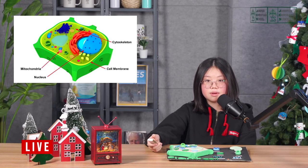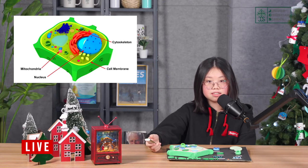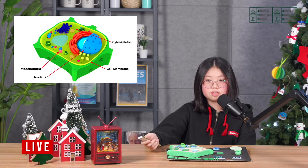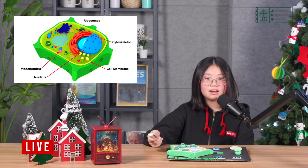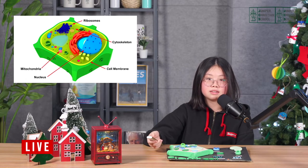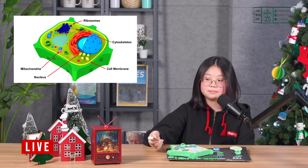Mitochondria. Mitochondria is where cellular respiration takes place and it breaks down food molecules with oxygen and releases energy, water, and carbon dioxide. Ribosome. This is the smallest organelle in the cell and it makes protein.